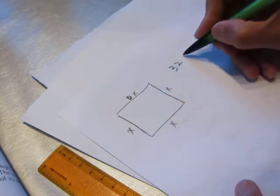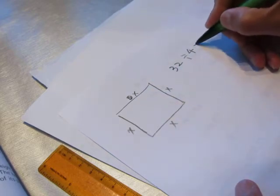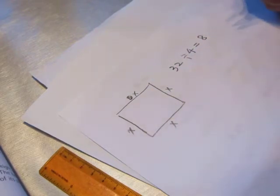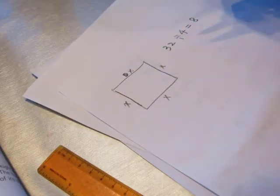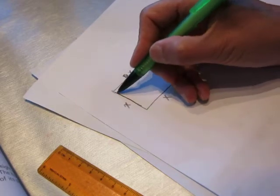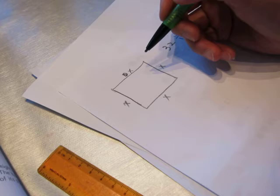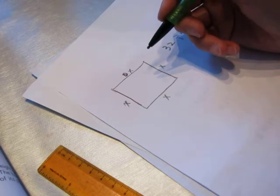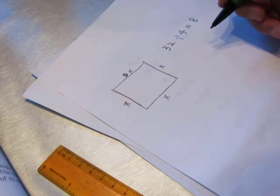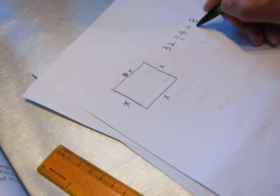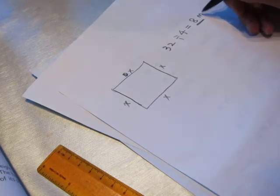So 32 divided by 4 is 8. So we know the side. One side of the square is 8 meters.